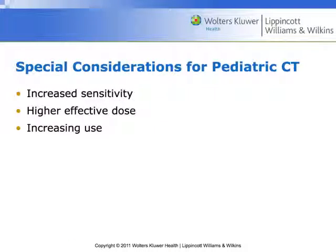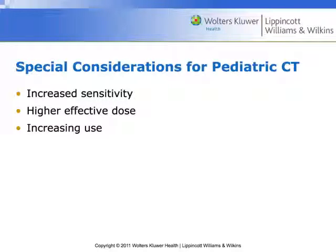The problem with kids is they have an increased sensitivity to radiation — they still have lots of rapidly dividing cells, which are more sensitive to radiation. We're going to have a higher effective dose for pediatric patients because there's a different tissue weighting factor for them. We're seeing it a lot more, and these are the reasons why we have to think seriously about scanning children.